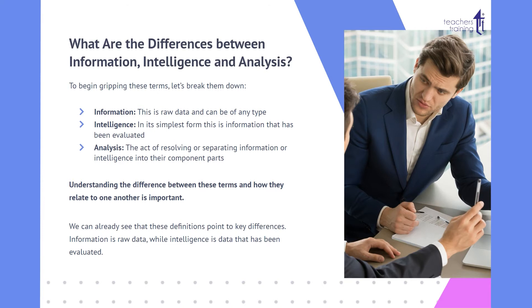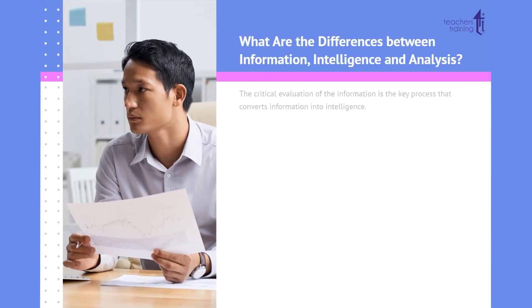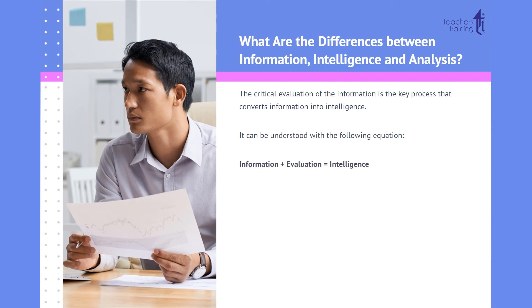Understanding the difference between these terms and how they relate to one another is important. We can already see that these definitions point to key differences: information is raw data, while intelligence is data that has been evaluated. The critical evaluation of the information is the key process that converts information into intelligence.